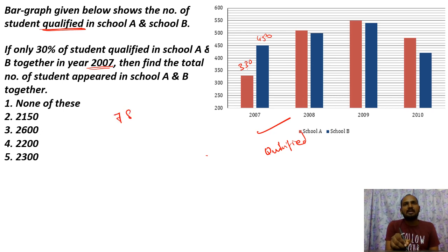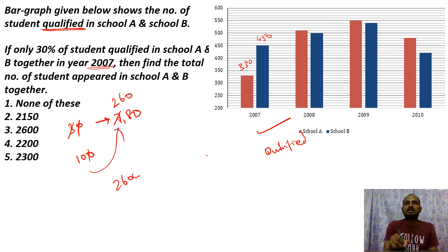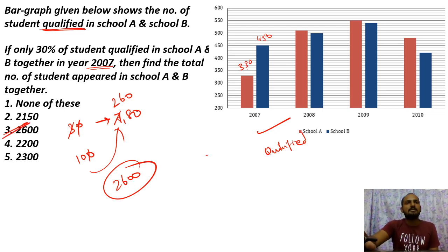So School A and B combined — if only 30% qualified, then what is 100%? You get the answer: 2600. Option 3 is the right answer.